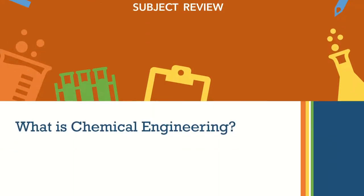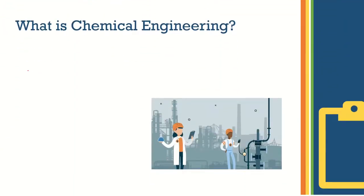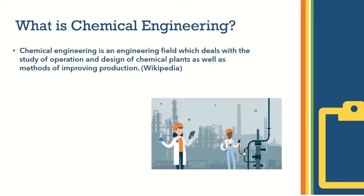First, we will see that the subject is the key of chemical engineering. Basically, we will see that the subject is the applied version of chemistry. We have pure chemistry, and chemical engineering is the application of this subject. We have a chemical plant, a chemical reaction, production from this reaction, and chemical design — very important work.